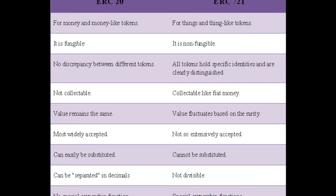Now let's talk about ERC-721 tokens and how they're different from ERC-20 tokens. The most important difference between the two is fungibility. ERC-20 tokens are fungible, while ERC-721 tokens are meant to be non-fungible. So if you're looking for something to facilitate transactions you'll want to use an ERC token based more on money, whereas ERC-721 tokens are used to represent non-fungible things. In short: money uses ERC-20, and NFTs use ERC-721.